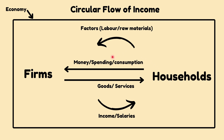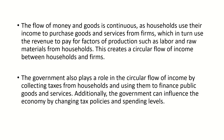Households spend money — they consume the goods and services. How do the households have the money in the first place to buy goods and services? They can provide factors to the firms in the form of labour and raw materials. In exchange, firms will provide them income or salaries. This is how households have the money. This is the simplest form of the circular flow of income. The flow of money and goods is continuous, as households use their income to purchase goods and services from firms, which in turn use the revenue to pay for factors of production, such as labour and raw materials from households. This creates a circular flow of income between households and firms.